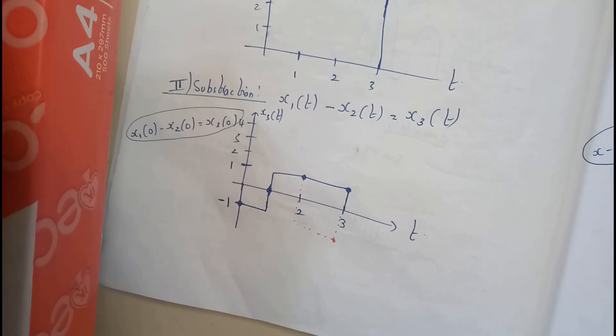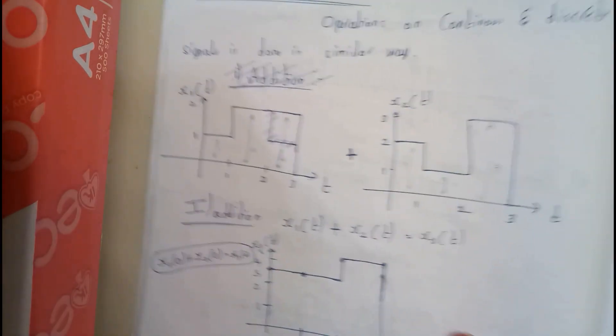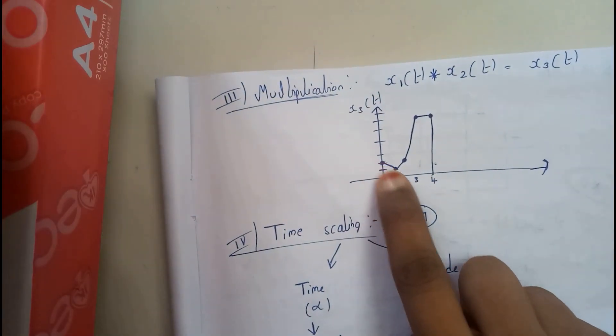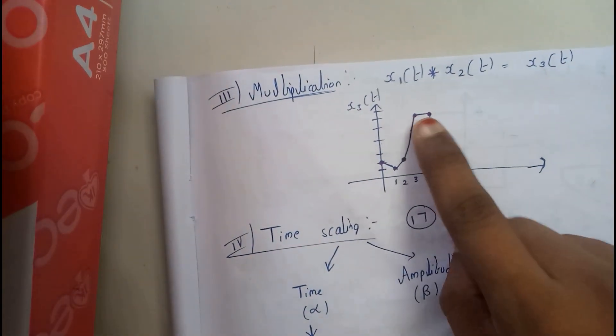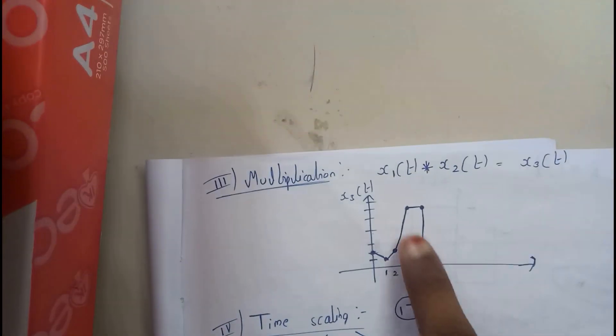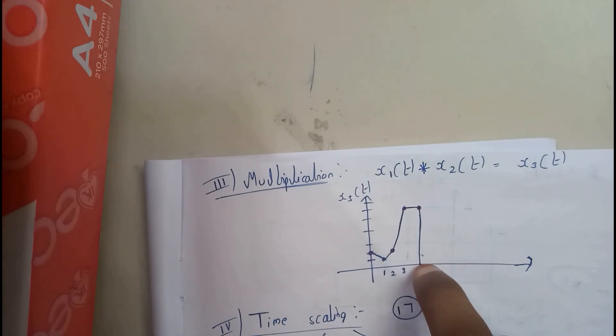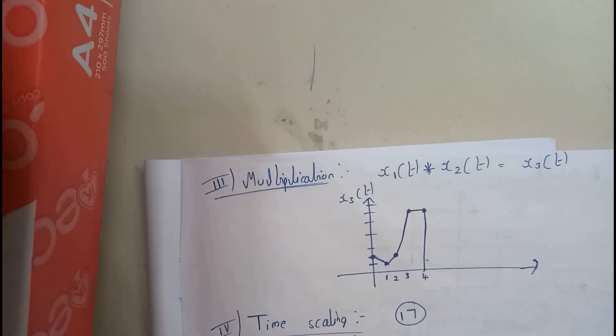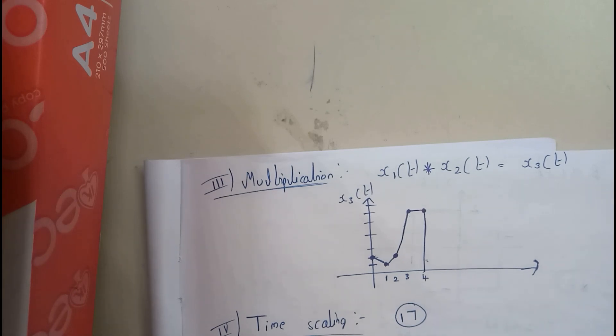So now I hope everyone is now clear with addition and subtraction. Multiplication is nothing but multiplication of these two - one into two which equals two, like that we form it. Here the value has I think came six or seven, three into two is six, so that's the reason why the graph suddenly rises. This is how we do the basic operations like addition, subtraction, multiplication on any signal.